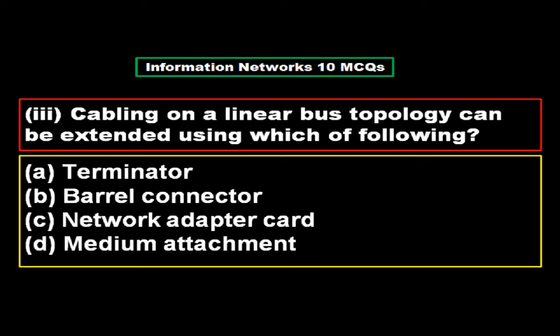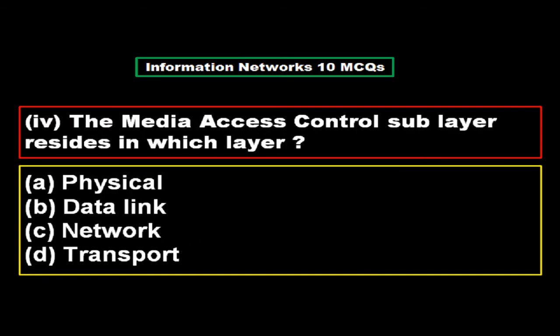Labeling on linear bus topology can be extended using which of the following? Option A terminator, option B barrel connector, option C network adapter card, option D medium attachment. The right answer is option B, barrel connector.